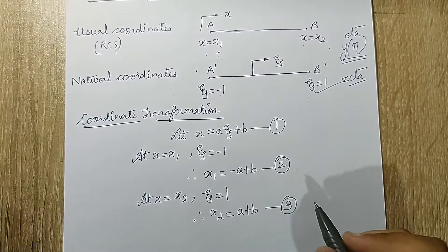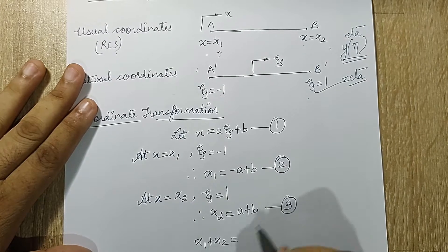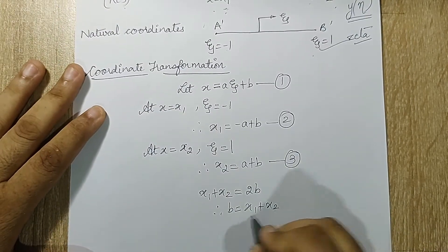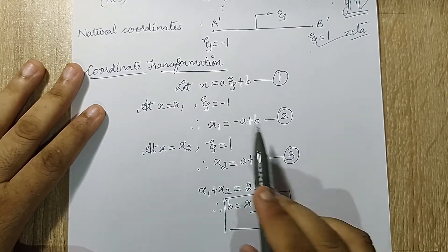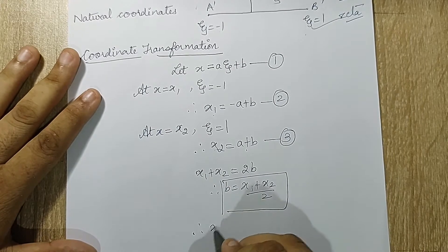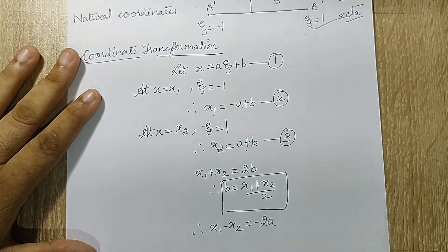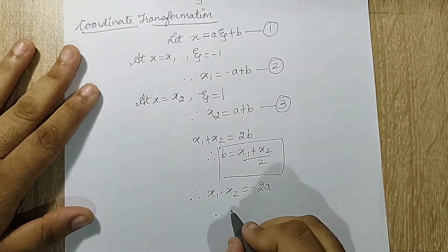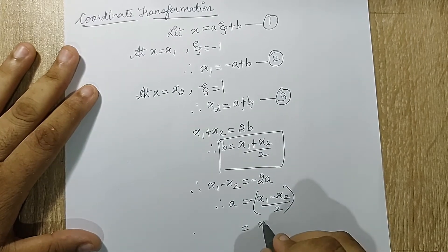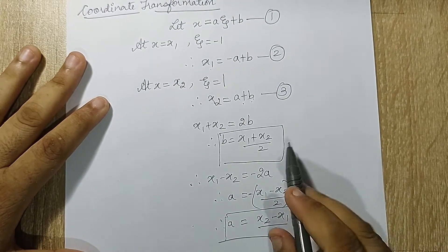If I add equations 2 and 3, I get x₁ + x₂ = 2b, therefore b = (x₁ + x₂)/2. If I subtract equation 3 from equation 2, I get x₁ - x₂ = -2a, so a = (x₂ - x₁)/2.